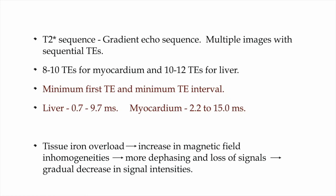The T2 star sequence is a gradient echo sequence. This sequence contains multiple images with sequential TEs — usually 8 to 10 TEs are used for the myocardial T2 star sequence, and 10 to 12 TEs for the liver sequence. The key factor is that your first TE should be as short as possible, with a minimum TE interval between echoes. At our hospital, for the liver T2 star sequence, the first TE is 0.7 with a TE interval of 1. For the myocardium, the first TE is 2.2 and we take around 8 TEs up to 15 milliseconds.